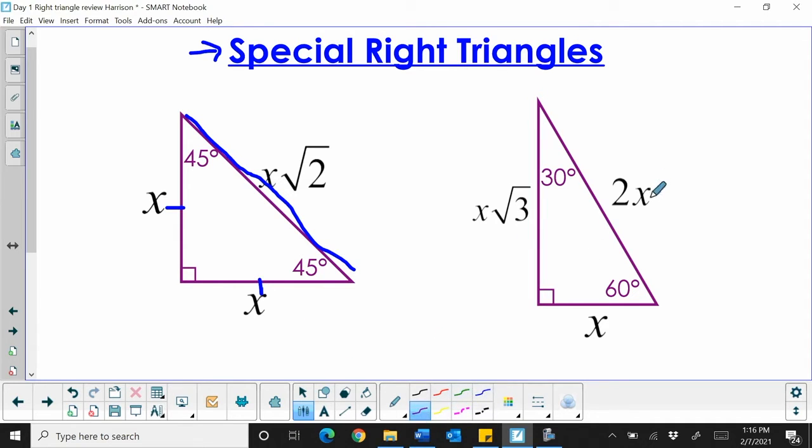Then for your 30-60-90, your short leg is opposite the 30-degree angle, and it's just X. So the relationship between the short leg and the long leg is you take the short leg times the square root of 3 to find the long leg, and you take the short leg times 2 to find the hypotenuse.